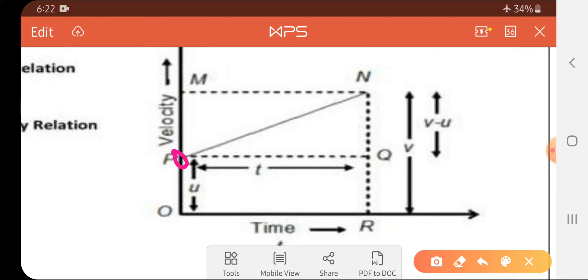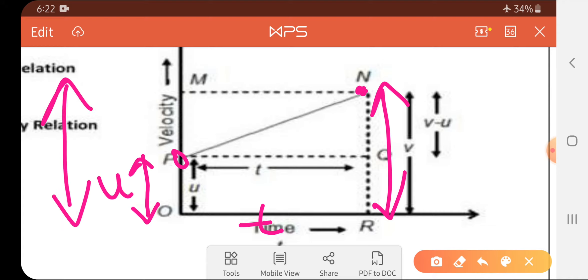We have some initial velocity, that is u. It is the initial velocity which the body is moving at that particular time. After t seconds, the velocity will increase to this height. This is the final velocity, which is v.